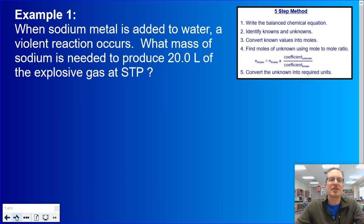So let's try example number one. When sodium metal is added to water, a violent reaction occurs. What mass of sodium is needed to produce 20 liters of the explosive gas at STP? Pause your video right now and do as many steps of the five-step method as you were able to do in order to try to solve this problem. When you get stuck or you would like to check over your work, please unpause the video and watch my process.